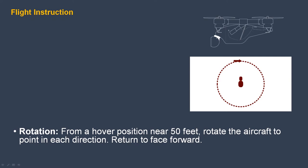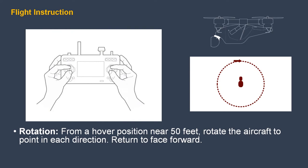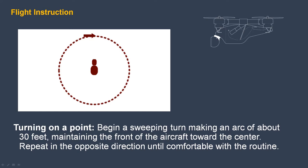From a hover position at about 50 feet, rotate the aircraft and continue around a circle to the left. Push the left control slightly to the left while moving the right control forward, so the drone moves forward and to the left, completing the circle — that's a coordinated turn. Turns in any aircraft create a loss of altitude, so you may need to adjust to compensate. Turning on a point is a little more complicated — begin a sweeping turn making an arc of about 30 feet, maintaining the front of the aircraft toward the center of the circle. Repeat in the opposite direction.